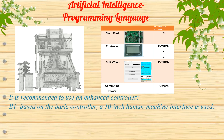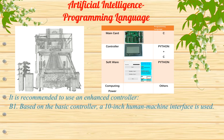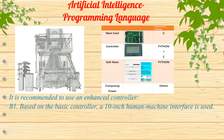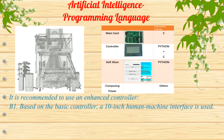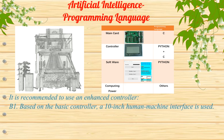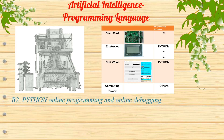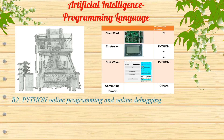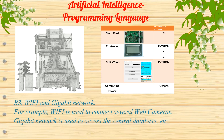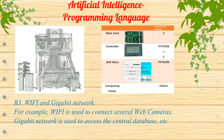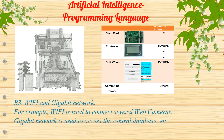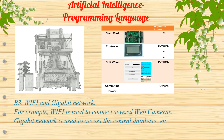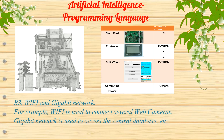It is recommended to use an Enhanced Controller. Based on the basic controller, a 10-inch human-machine interface is added. Features include: B2. Python online programming and online debugging. B3. Wi-Fi and Gigabit Network — for example, Wi-Fi connects web cameras (e.g., G-Series), and Gigabit Network accesses the central database.